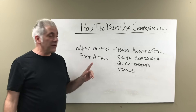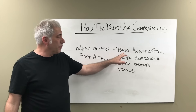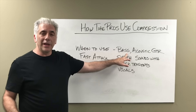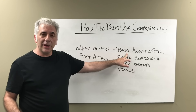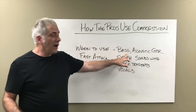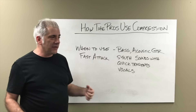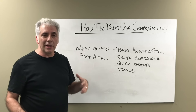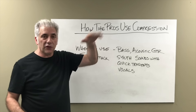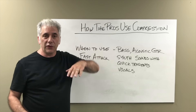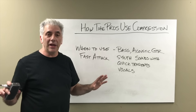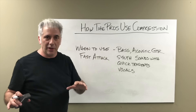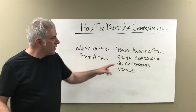Things that you might want to use a fast attack on are really the bass. If you have a bass player that plays really inconsistently, you're going to want to have a fast attack time because a lot of times those initial transients are really inconsistent. You'll see these spikes all over the place. You can just look at the track in your DAW and see that it's really inconsistent because you can see the transients.